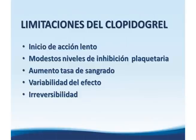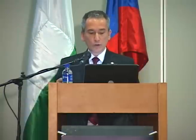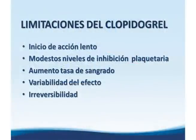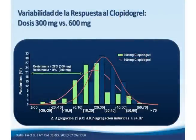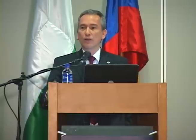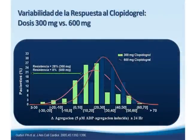El clopidogrel es una excelente droga que desplazó a la ticlopidina, pero tiene limitaciones: inicio de acción lento, niveles modestos de inhibición plaquetaria, variabilidad en el efecto y reversibilidad. Respecto a la resistencia: con carga de 300 mg la tasa de resistencia es del 28%, y con 600 mg baja al 8%. En realidad no hay verdadera resistencia, sino que se necesita una dosis más alta para lograr el efecto farmacocinético adecuado sobre el receptor.